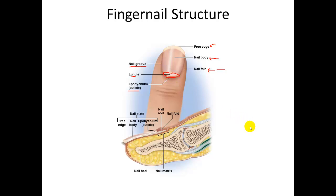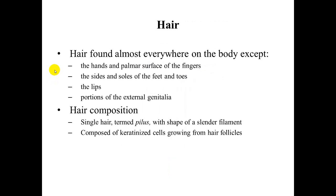Looking at a longitudinal section of a finger, you can see the three components of the nail plate: the free edge, the nail body, and the nail root, which is back underneath the cuticle itself. The nail fold is that piece of skin over top of the nail root. In the nail root, you have the nail matrix — the area of actively dividing cells that give rise to the nail itself.